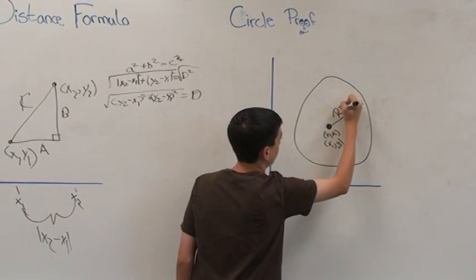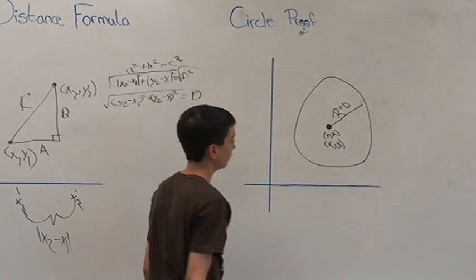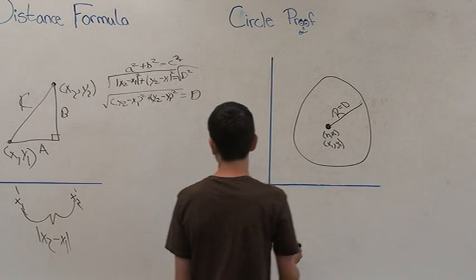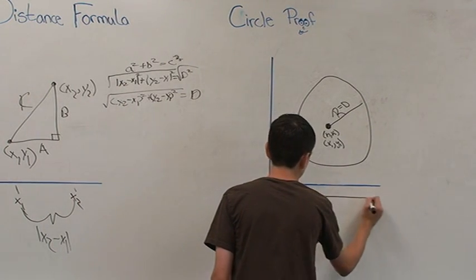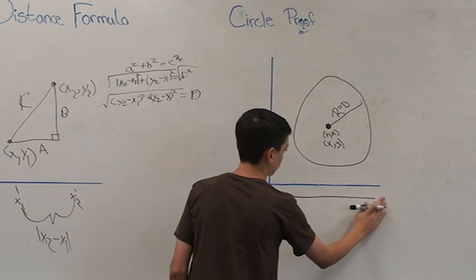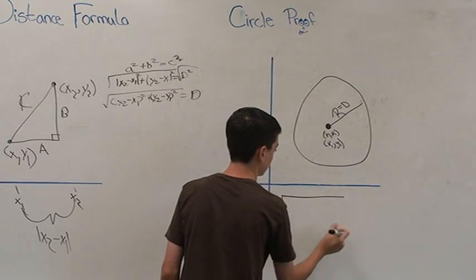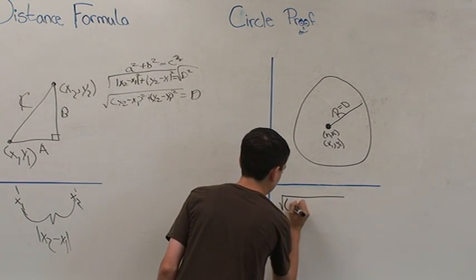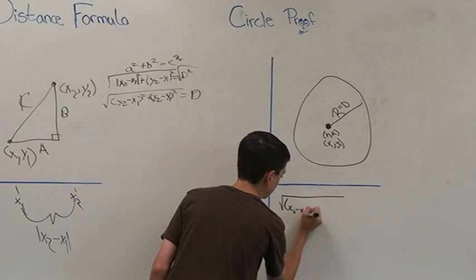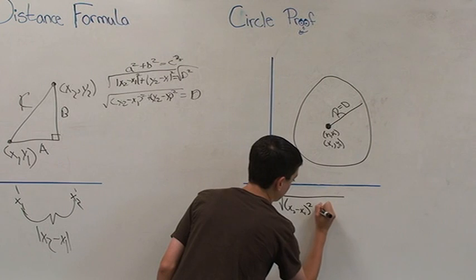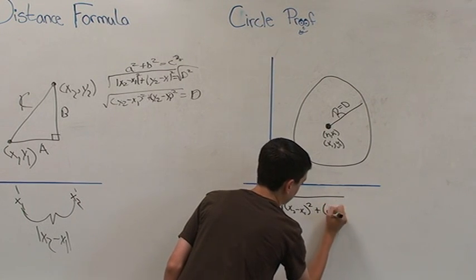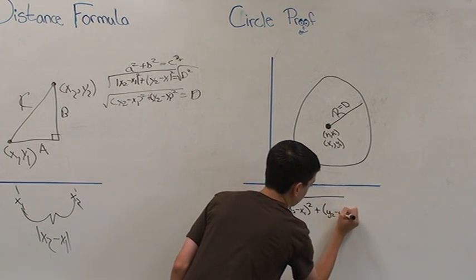Now, we use all that information and plug that into our distance formula. The distance formula is going to be rewritten. Square root of x2 minus x1 quantity squared plus y2 minus y1 quantity squared equals D.